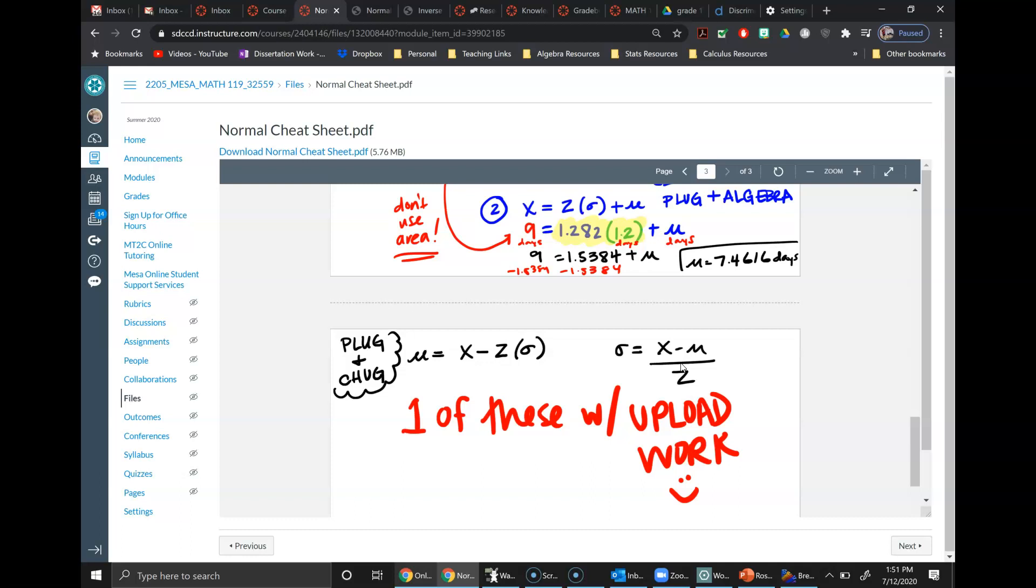For everything on exam 2, you're going to have to have supporting work. If you don't, you're not going to receive credit. And the real reason here is that it's super easy. A lot of the questions are numeric entries, so it's super easy to type something in wrong and miss points, or to do the wrong side of the curve. And I don't want you to lose all five points, all six points of a problem.